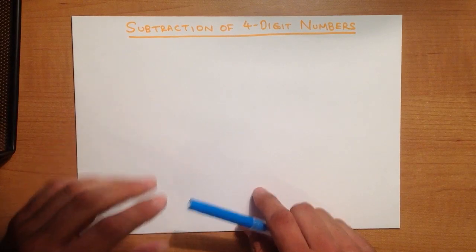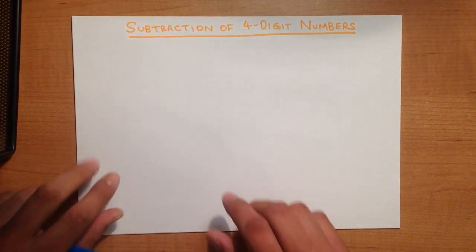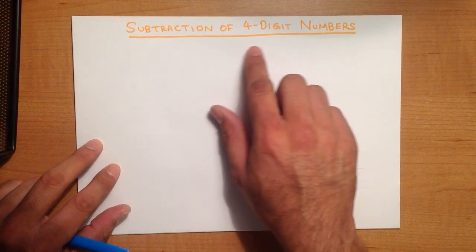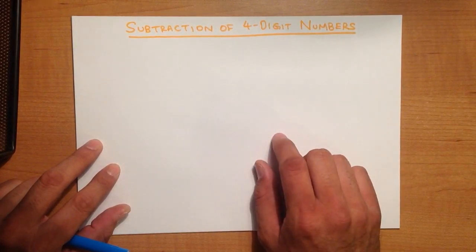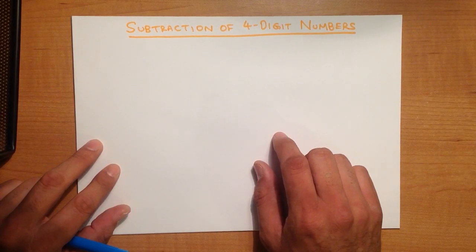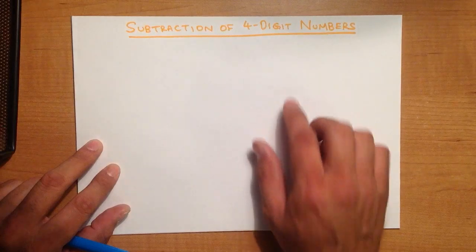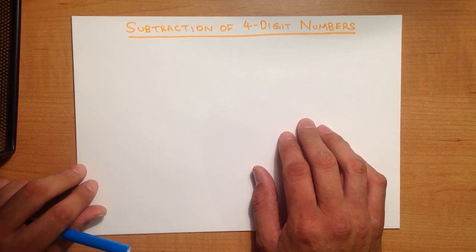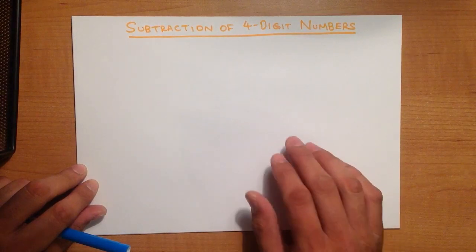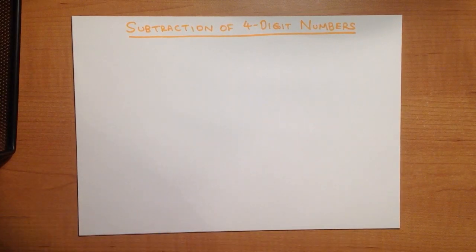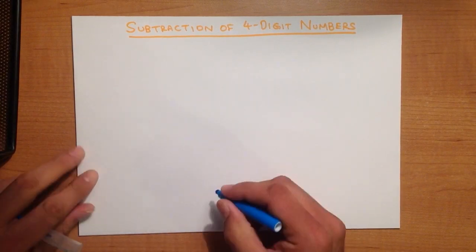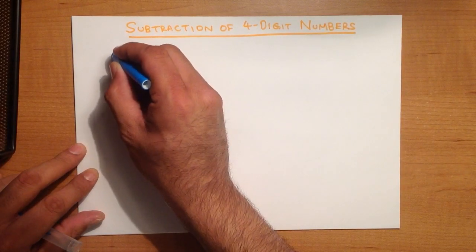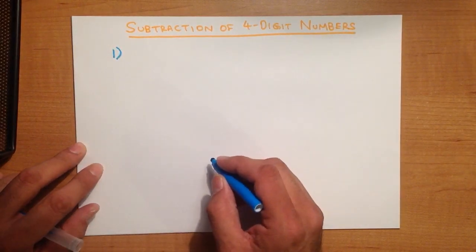In this tutorial, we are going to go through subtraction of four-digit numbers using the vertical format. We have already gone through tutorials where we have subtracted two-digit numbers and three-digit numbers using the vertical format. This is the next step forward. So let's start with a nice easy example.